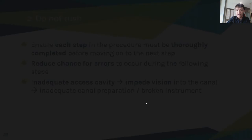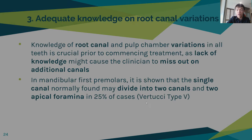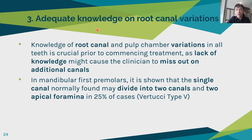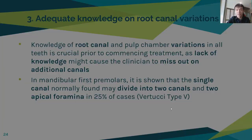We must also have adequate knowledge of root canal variations. If you don't have good knowledge of the tooth you are treating, you might miss additional canals. For example, in mandibular first premolars, it is shown that the single canal may divide into two canals and two apical foramina in 25% of cases. We must be aware of this possibility and search for it — if it's not there, that's fine, but if it is, you won't leave any unprepared canals.